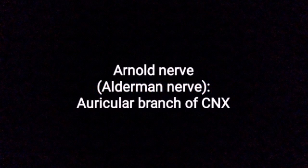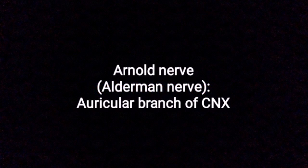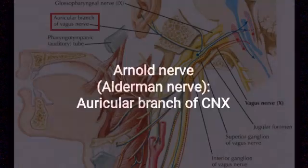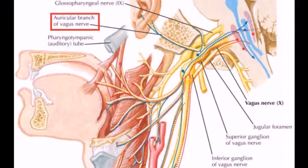What is Arnold's Nerve? Arnold's Nerve, also called the Alderman's Nerve, is the Auricular Branch of the Vagus Nerve.